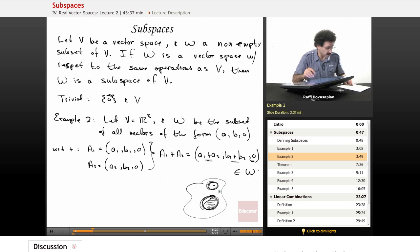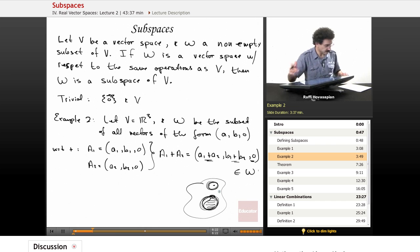Now let's check scalar multiplication. c times a equals c times (a, b, 0), which equals (ca, cb, 0). Sure enough, that's a number, that's a number, the third element is still zero, so that's also in W.